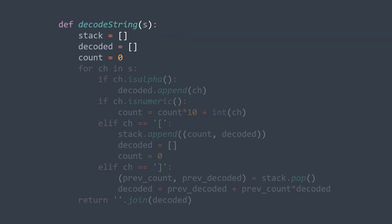For the algorithm, we need a stack, a string to store our decoded result, and an integer count to store the integer we find. We use an array instead of a string for decoded, because adding characters to a string creates a whole new string since strings are immutable in Python — so we use an array and join characters at the end. While traversing the string, we have four cases: the character is a letter, a digit, an opening bracket, or a closing bracket.